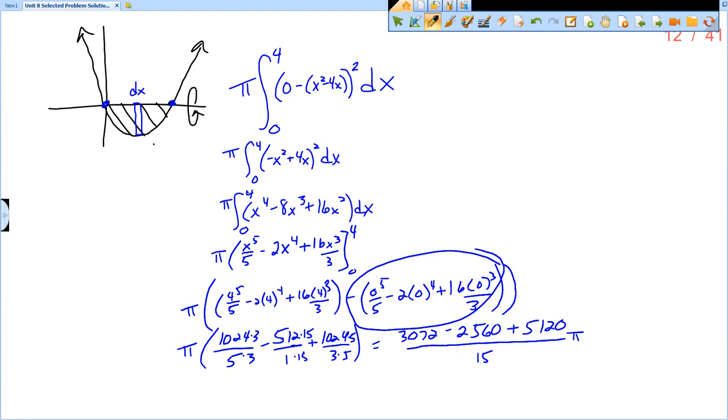So 3072 minus 2560 plus 5120 gives us 5632 fifteenths. Which I believe is not correct.